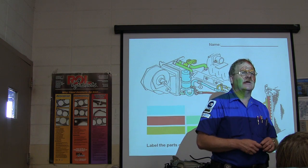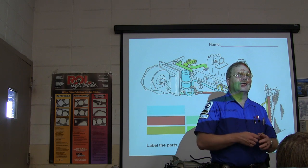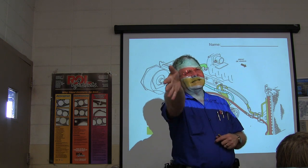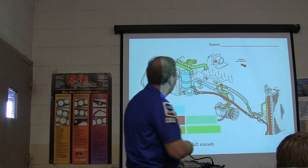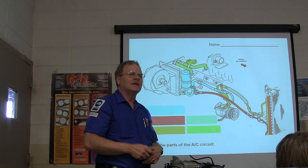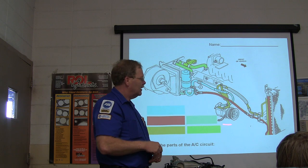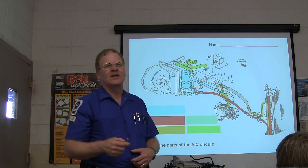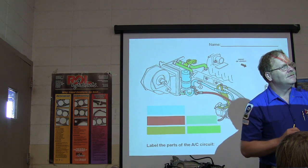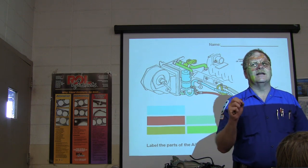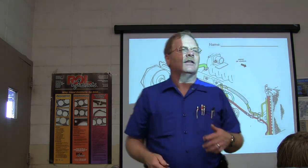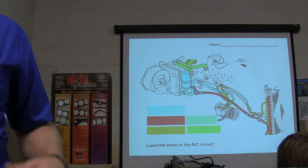Is everybody following this? Basically, the refrigerant is going in a circle. As it turns into liquid in the condenser, it gives off heat. As it turns into vapor in the evaporator, it absorbs heat. The two principles this is based on are the latent heat of vaporization and the latent heat of condensation. Truthfully, you'll almost never use those principles to actually fix a car, but it's part of understanding the theory.